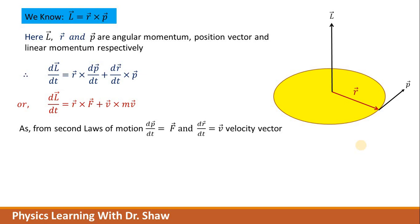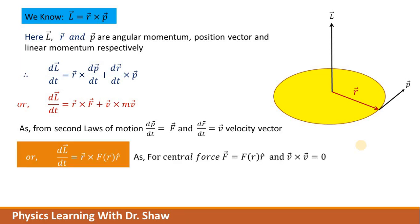From the property of cross product, we know the cross product between two same vectors is zero, that is V cross V equals zero. Since m is a constant quantity, m can be taken outside, and we can write V cross mV as V cross V, which is equal to zero.